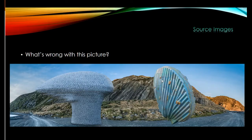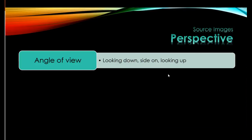Next question: what's wrong with this picture? Hopefully the thing that you spotted is this shell isn't sitting into the landscape and looks really odd. Part of that is to do with the fact that the perspective is wrong — we're looking down on the shell whereas it should be sitting flat on the ground. There are a few other things wrong with it too, but I'll let you think about those for yourself.